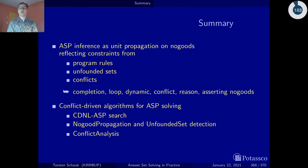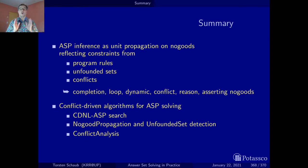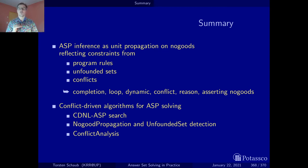Here are just a few. Completion and loop no-goods we get from the program rule and from unfounded sets. Then we have the dynamic no-goods that may be there for a certain time but also be forgotten at a certain time — because the only thing we need to keep track of are the reasons for our assignments on our current branch in the search space.